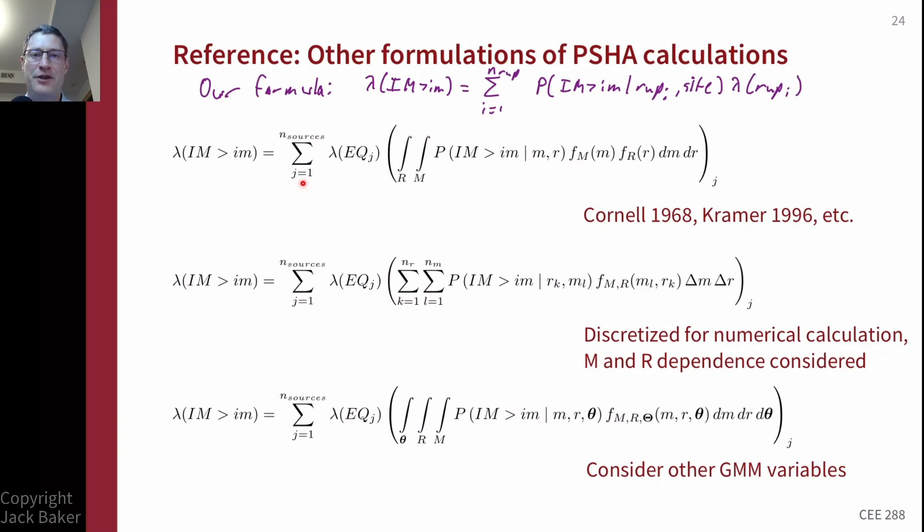It was also reproduced in a popular textbook by Steve Kramer in 1996 in Geotechnical Earthquake Engineering and other places. So what they wrote out, Allan and Steve and others said, let's do a summation over our sources. There's multiple sources. We'll have to sum those up and we'll have a term for the rate of earthquakes on source j.